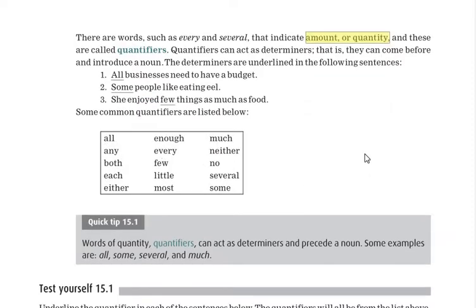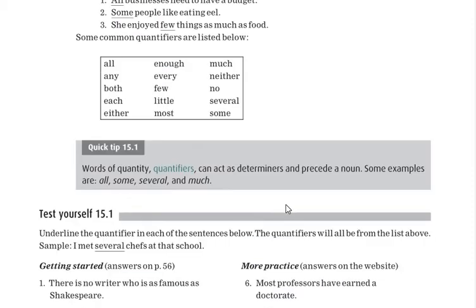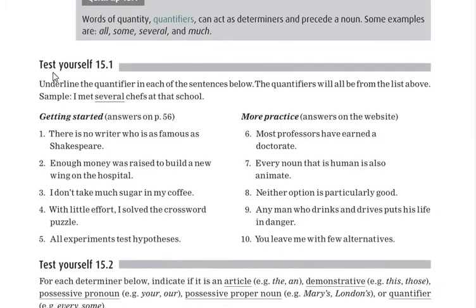A tip to remember: words of quantity, like quantifiers, can act as determiners and precede a noun — like all, some, several, much — followed by a noun. Now test yourself on what you have learned by underlining the quantifiers in each sentence below.